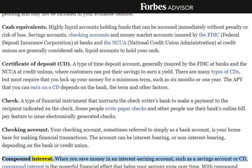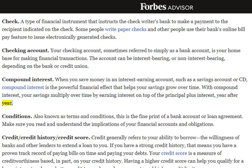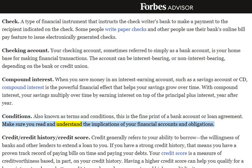Compound Interest: When you save money in an interest-earning account, such as a savings account or CD, compound interest is the powerful financial effect that helps your savings grow over time. With compound interest, your savings multiply over time by earning interest on top of the principal plus interest, year after year. Conditions: Also known as terms and conditions, this is the fine print of a bank account or loan agreement. Make sure you read and understand the implications of your financial accounts and obligations.